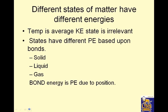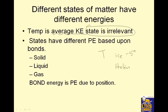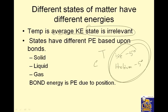Different states of matter have different energies. Temperature is the average kinetic energy — the motion of the particles — and the state of matter is irrelevant. So what has a greater temperature: an ice cube at minus five degrees or helium gas at minus five? They have the same average kinetic energy. States have different potential energies based on bonds — solids, liquids, gases. Gases have the most potential energy, liquids the middle, solids the least.